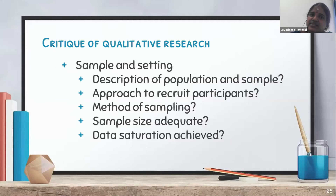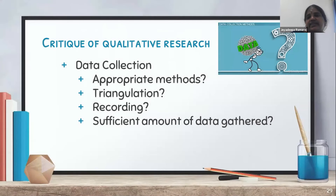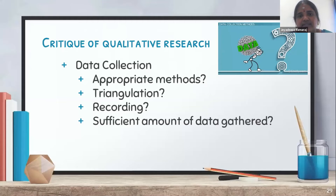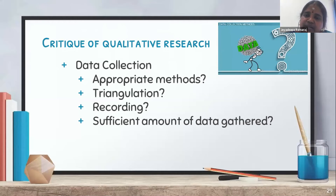Then comes data collection. You check whether appropriate methods are used and whether triangulation was done — that is, whether various methods of data collection were used to collect maximum information, and whether that is explained in the research study. You also check how the data was recorded — by audio tape, video tape, or interview notes — whether that is described in the article, and whether a sufficient amount of data was gathered.